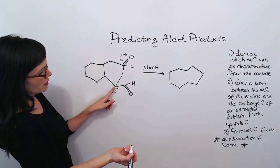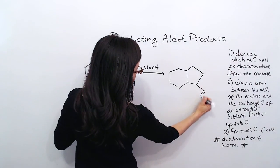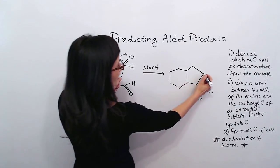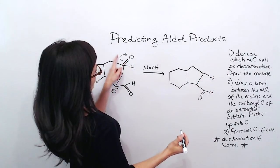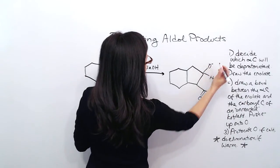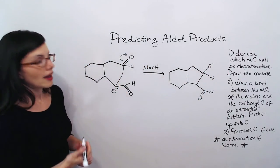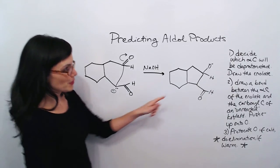On this corner, we've got this aldehyde group coming off. On this corner, we've now got an H. And this is now an O-. And then on this corner, we've got nothing. And our final step is to protonate this O.